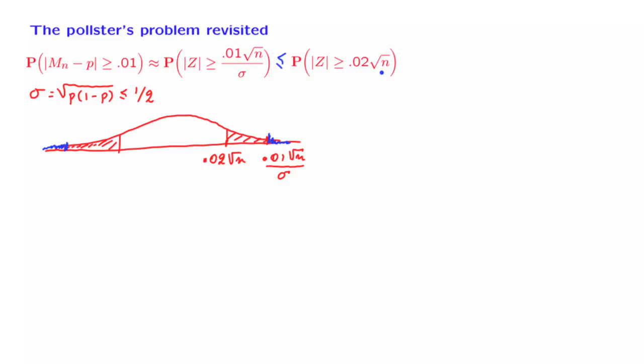So now if somebody gives us a value of n, we should be able to calculate this probability. How do we calculate it? The probability that the absolute value is above a certain number is equal to the probability of this tail plus the probability of that tail. But because of the symmetry of the normal distribution, this is twice the probability of each one of the tails. What is the probability of this tail? It's 1 minus the probability of whatever is below that. So it's 1 minus the standard normal CDF evaluated at 0.02 square root n.